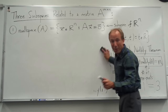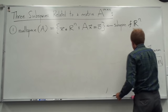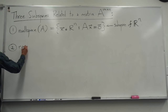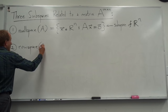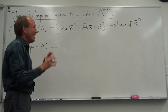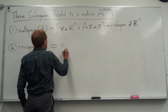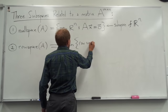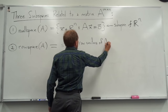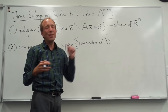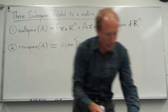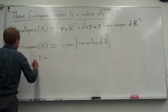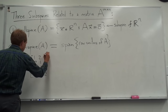I said there are three subspaces related to a matrix. Let me quickly tell you about the other two. The second one is called the row space of A. The row space of A is just the span of the set of row vectors of A. So you look at the matrix, treat its rows as vectors. Going back to this same example — A is the 4 by 3 matrix with rows (1,2,6), (2,1,6), (0,1,2), and (1,0,2).